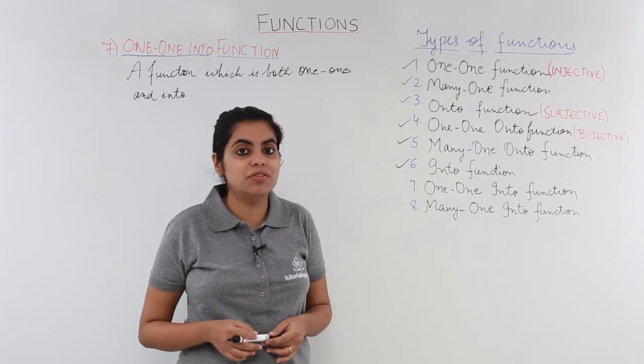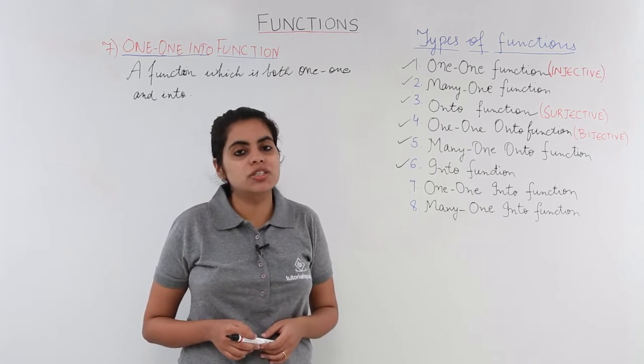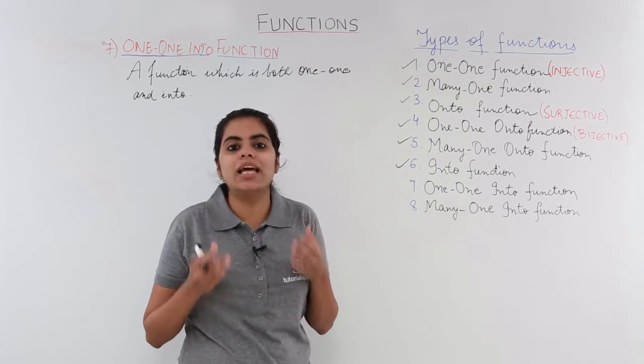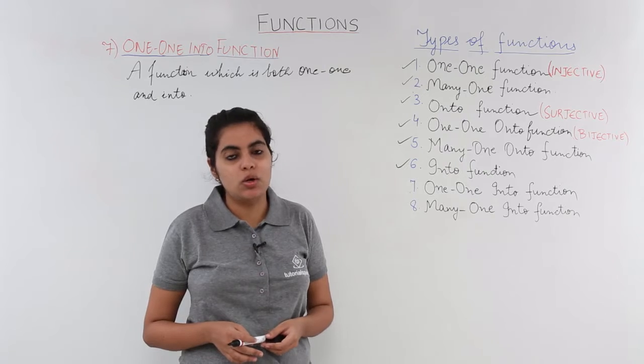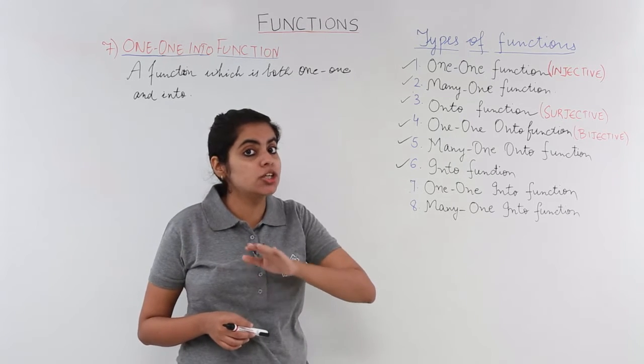And combining those two, we have the new type which is one-one into function. A one-one function is the one in which different elements have different images, while an into function is the one which is not onto.